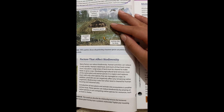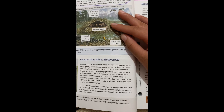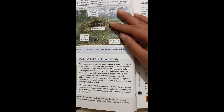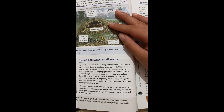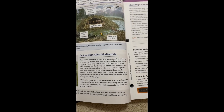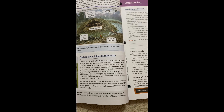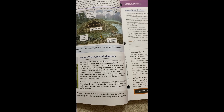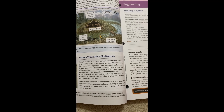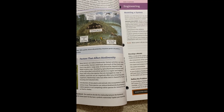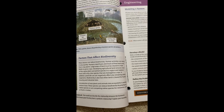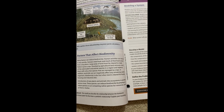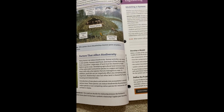Biodiversity is also lost when land is cleared for human housing and industrial sites. Introduction of new plants and animals into ecosystems is another serious issue. These species can reduce biodiversity by preying on native species or out-competing native species for resources, such as food or shelter.